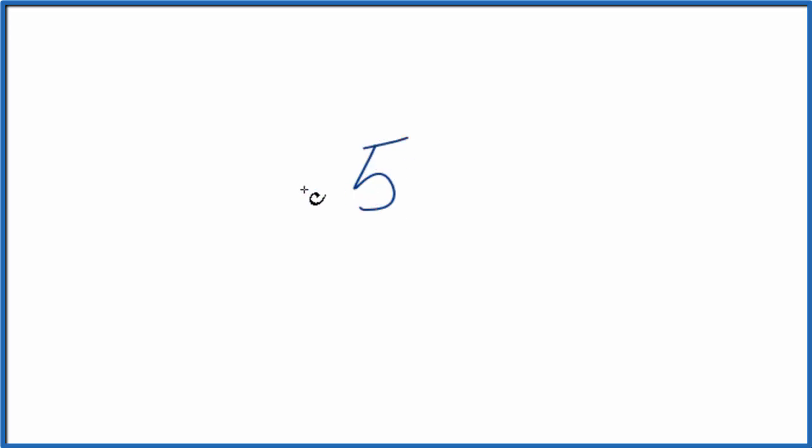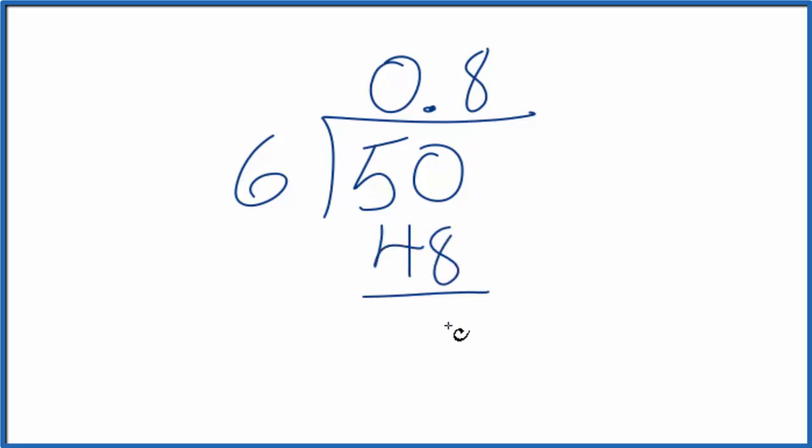So we take 5 and we want to divide that by 6. 6 doesn't go into 5, so let's put 0 point. We'll make this 50. 6 times 8, that's 48. We subtract it, we get 2.